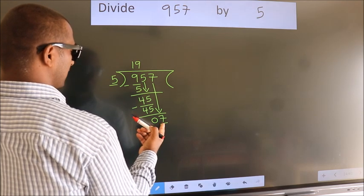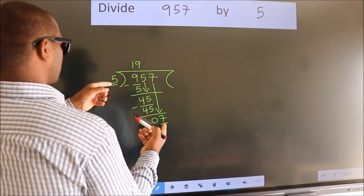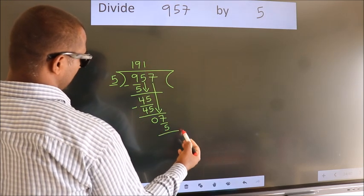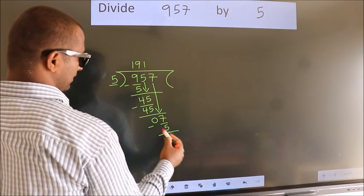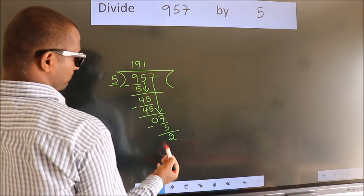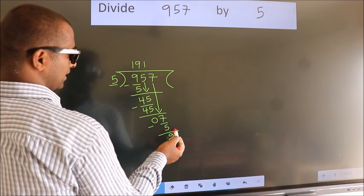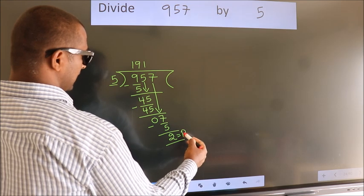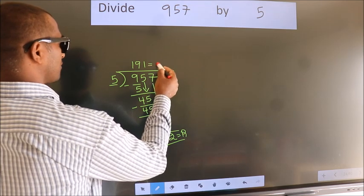A number close to 7 in the 5 table is 5 once 5. Now we subtract. We get 2. No more numbers to bring down, so we stop here. This is our remainder. This is our quotient.